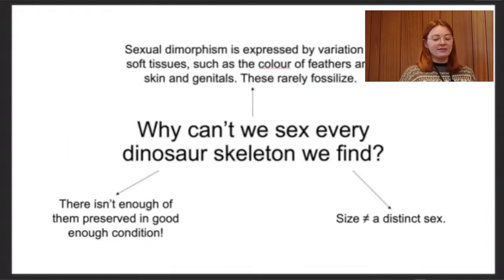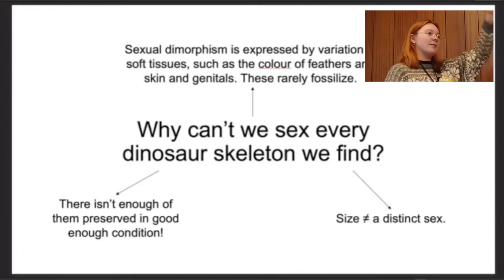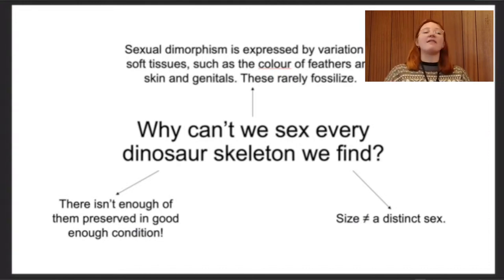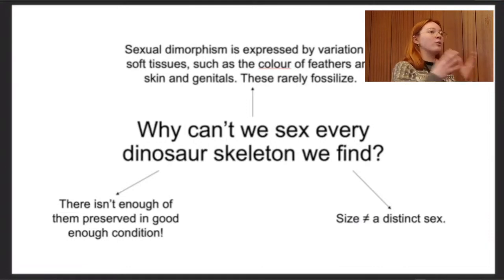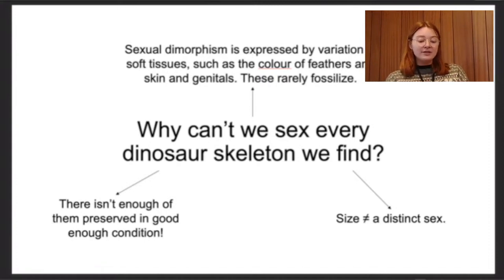So why can't we sex every single dinosaur skeleton we find? As we've seen, sexual dimorphism is expressed primarily by variation in soft tissues — skin, feathers — or just a more expressed or bigger feature, which won't fossilize. We don't see a lot of skin in the dinosaur fossil record, and where we do get skeletons, they're often not complete. That's really rare; we need very specific taphonomic conditions to get a really well-preserved, articulated complete skeleton.